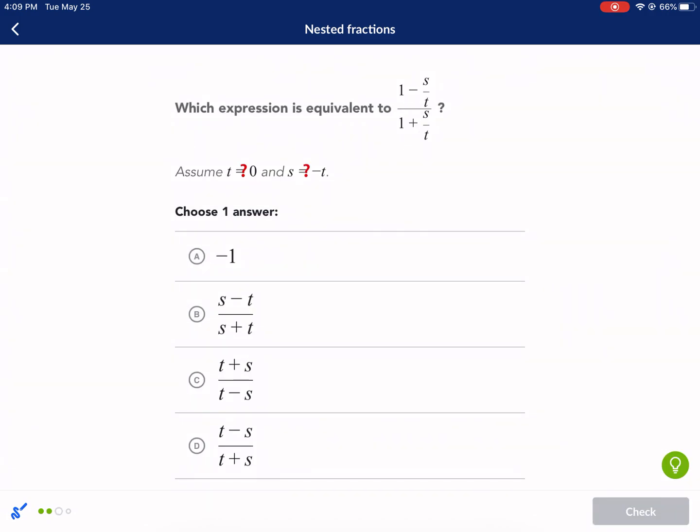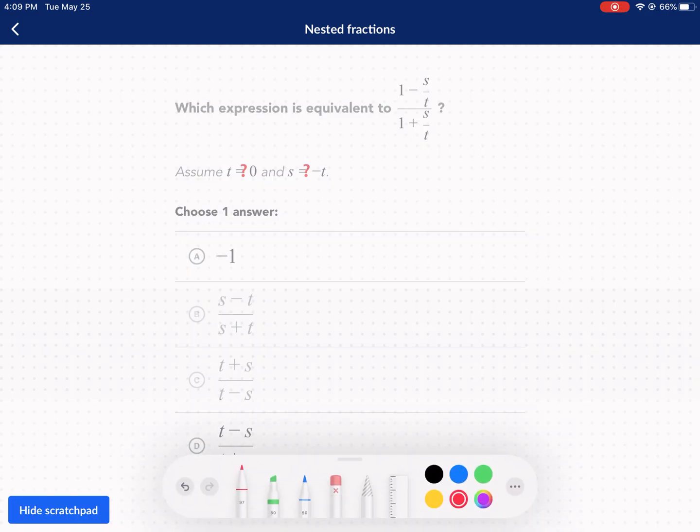Which expression is equivalent to 1 minus s over t over 1 plus s over t? Assume that t and I have some weird question marks here. I'm guessing that means t can't be equal to 0 and s can't be equal to 0. Now, we have our keep part. We have our change, of course. And then we have our flip in the denominator. But one thing you're going to notice is the top and the bottom, both are not all one fraction. Notice how it's an expression.